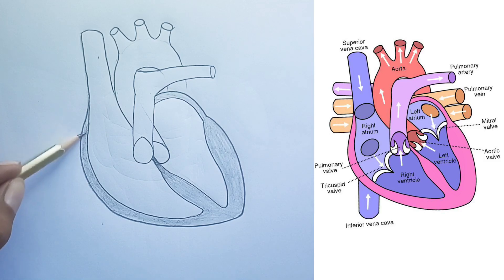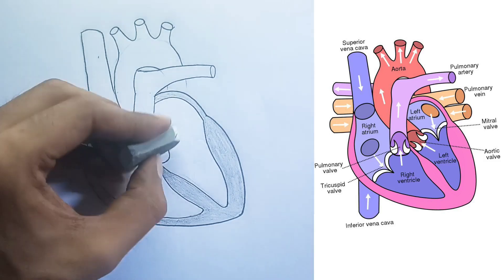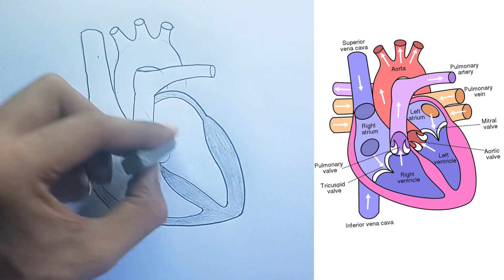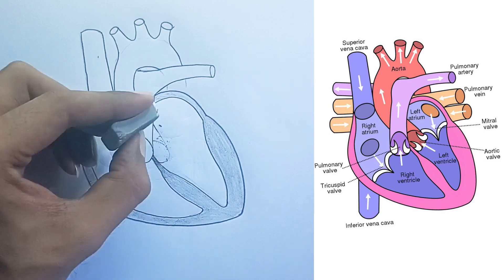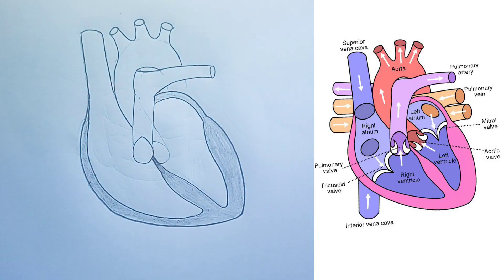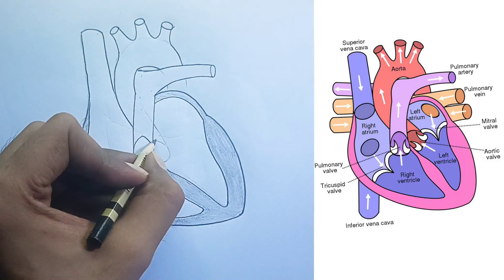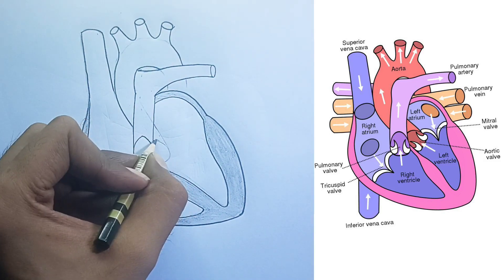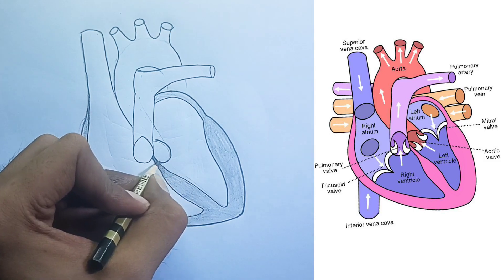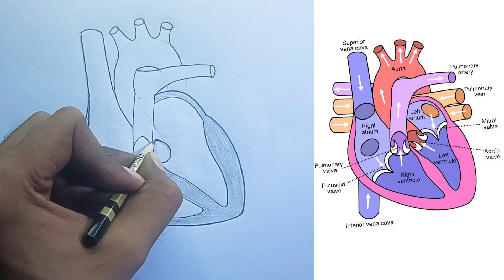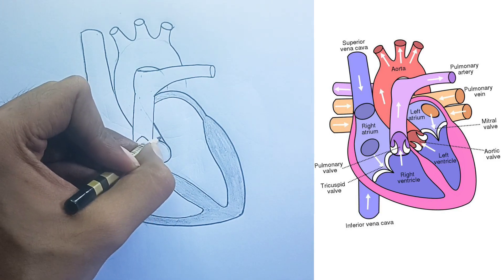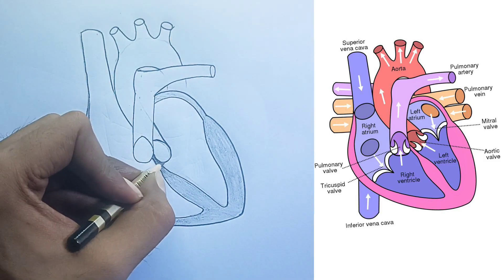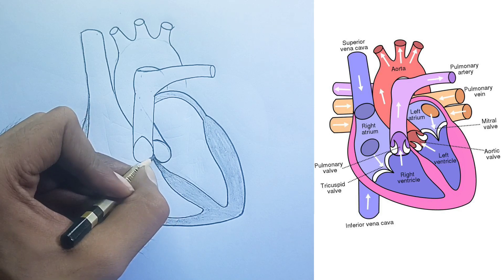In essence, the right side of the heart deals with deoxygenated blood, pumping it to the lungs, while the left side deals with oxygenated blood, pumping it to the rest of the body. The synchronized action of these chambers, vessels, and valves ensures efficient circulation of blood throughout the body.